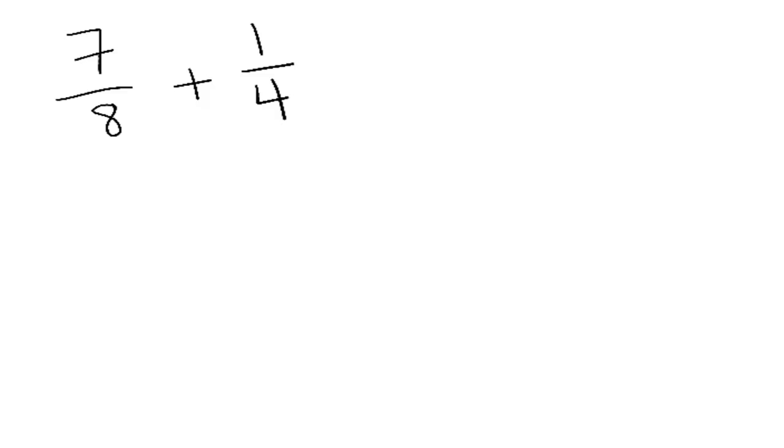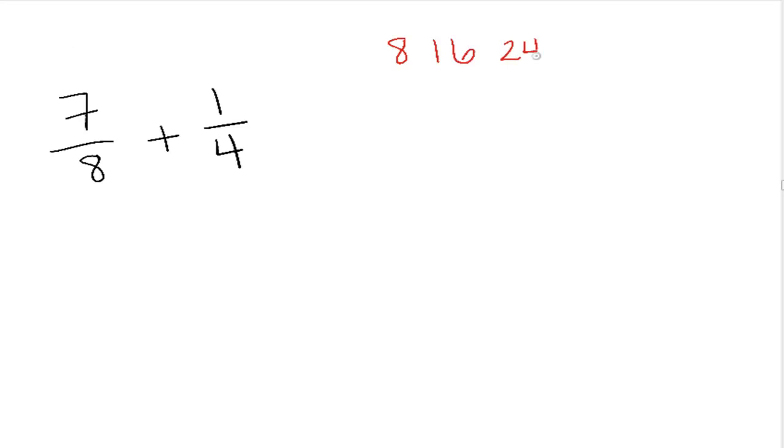And the way that you do this is you think of least common multiples. For example, multiples of 8 are 8, 16, 24, 32, etc. Multiples of 4 are 4, 8, 12, 16, 20, 24, and so on.